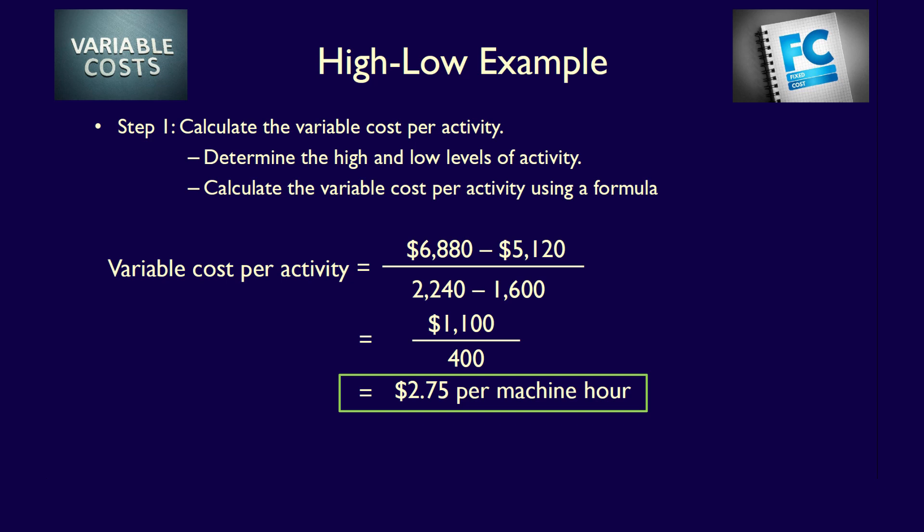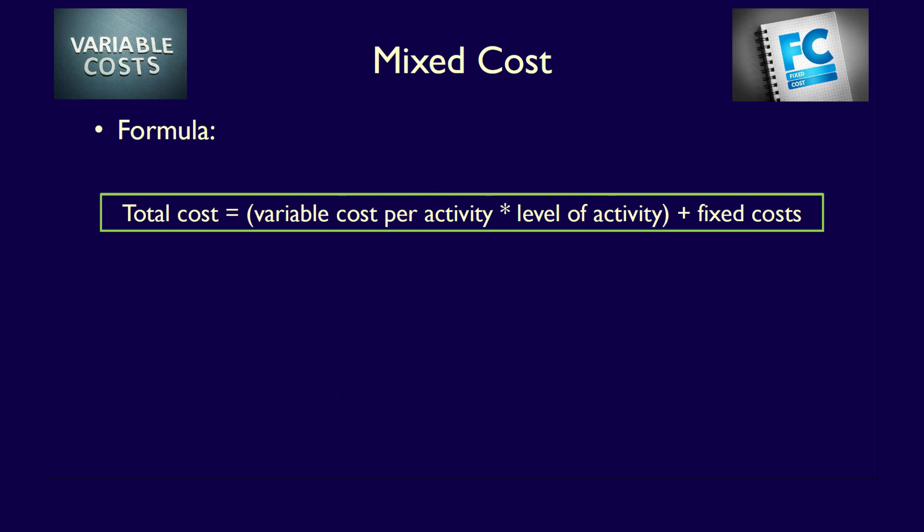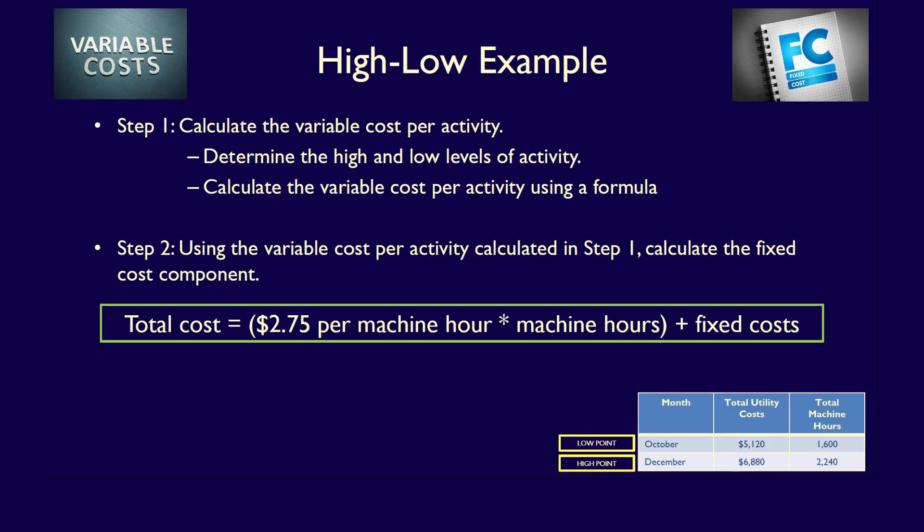We've now separated out the variable cost component of the mixed cost. The formula for the mixed cost is: total mixed cost equals variable cost per activity multiplied by the level of activity plus fixed costs. We can now replace part of the formula: total mixed cost equals $2.75 per machine hour multiplied by machine hours plus fixed costs. However, we're still missing the fixed costs, so let's move on to step two.